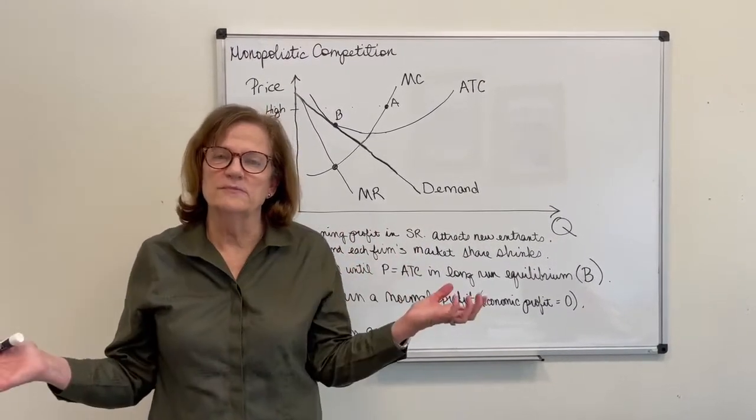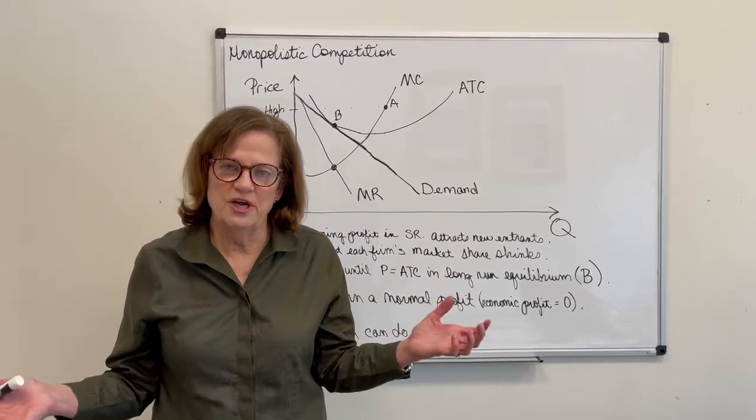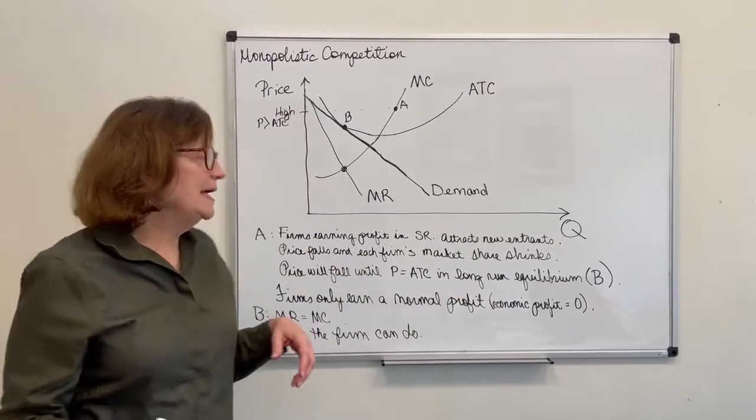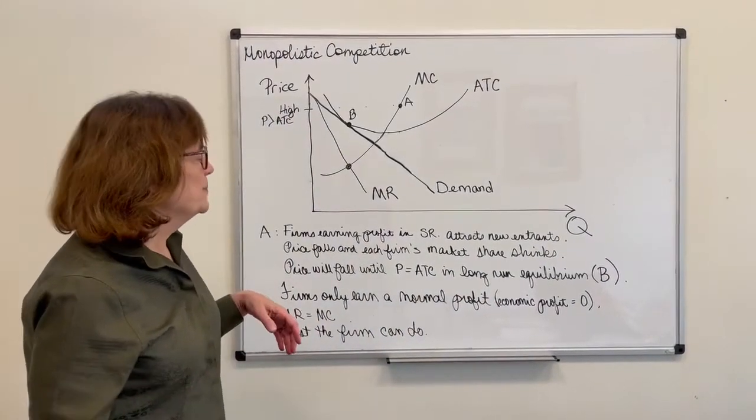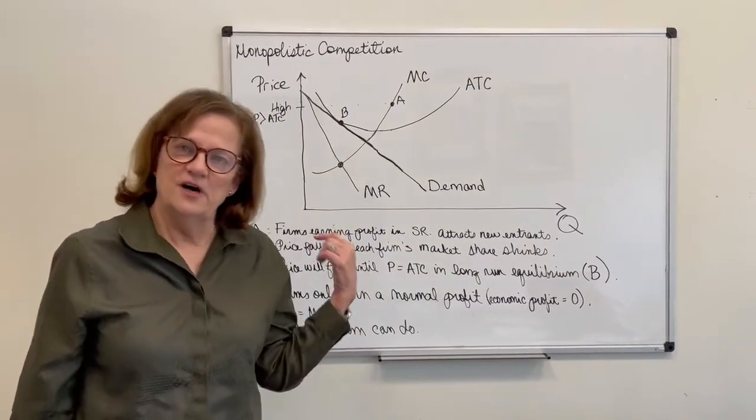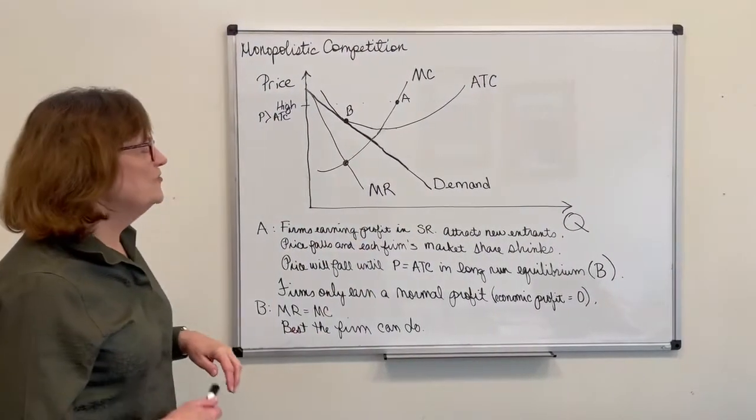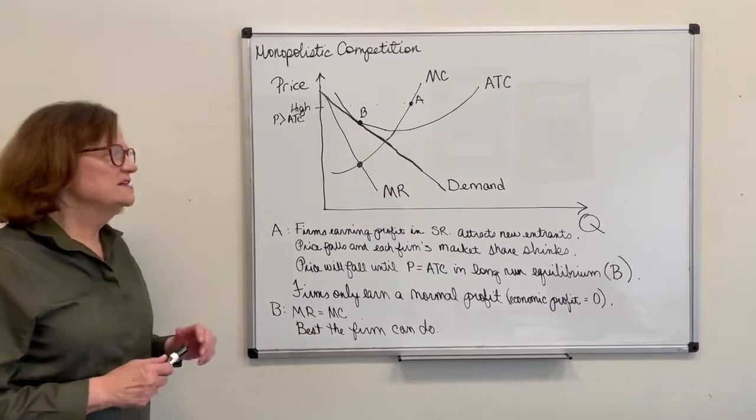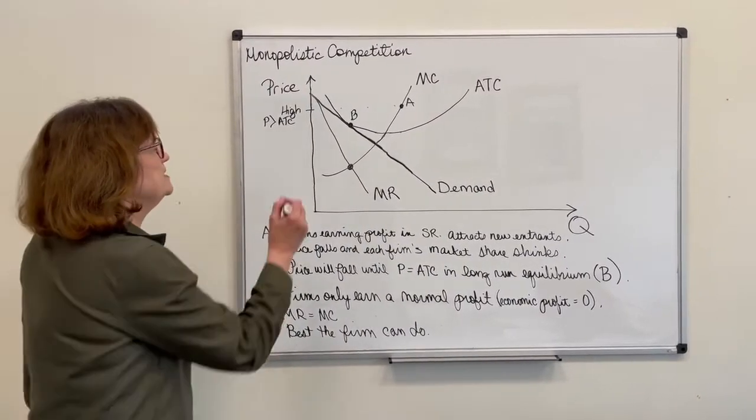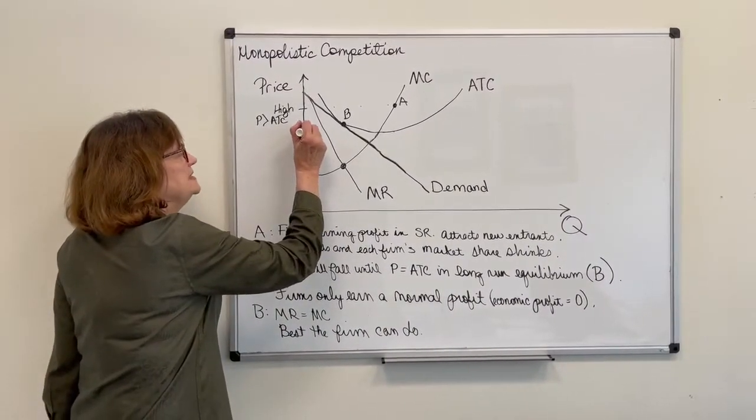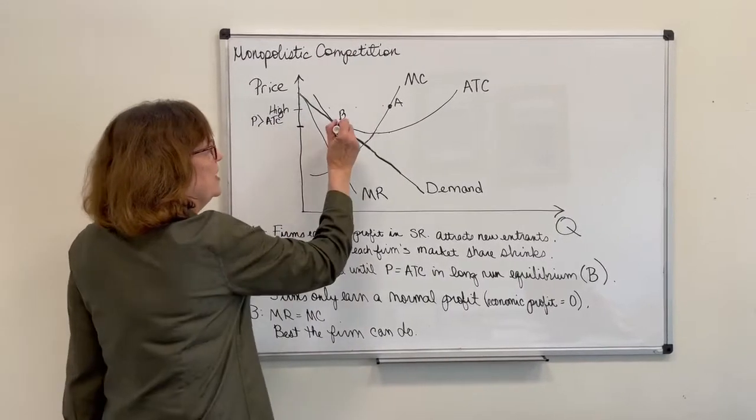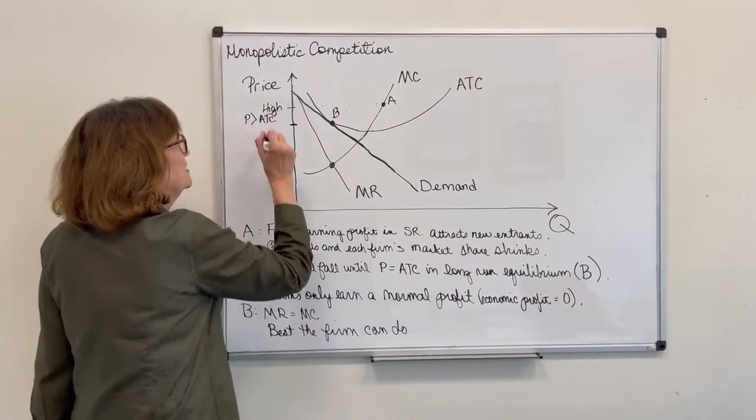So all the existing firms will lose market share and as the supply increases the price is going to fall. So how far will the price fall? The price will fall until it equals average total cost in the long run.